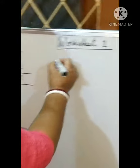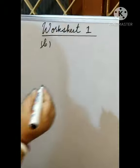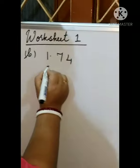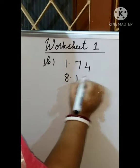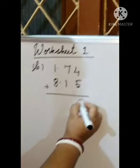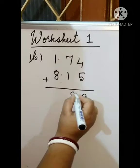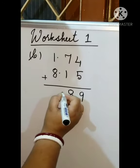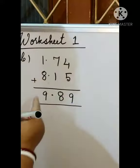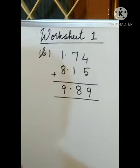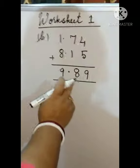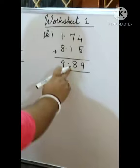Now come to the second one. It is 1.74 plus 8.15. So how to add, see children: 4 plus 5 is 9, 7 plus 1 is 8, and decimal point will come down here. Then 1 plus 8 is 9. So the answer is 9.89. I hope you are understanding. Very simple it is. As you are doing the addition, it is same. Just be careful while putting the decimal point.